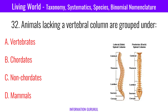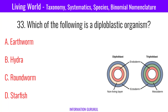Animals lacking a vertebral column are grouped under non-chordates. Which of the following is a diploblastic organism? Hydra.